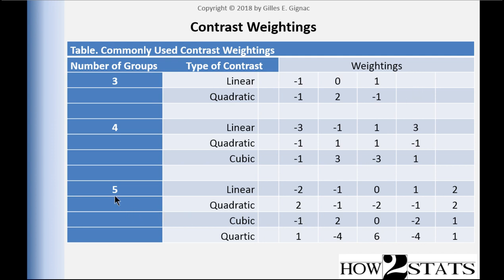Finally, for five means, there are corresponding patterns for the contrast weightings. You don't have to generate these yourself or memorize them — you simply look at a table and identify the coefficients that represent the hypothesis you have in mind. In subsequent videos, I'm going to show you examples of doing this in SPSS, and you'll get a sense of how these contrasts are tested and the results you get from them.